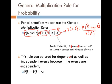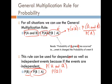When we have independent events, note that the probability of the second event is the same as the conditional probability. For example, the probability of selecting a queen given that we got heads when we flipped the coin is the same as the probability of selecting a queen. That's an example of independence.